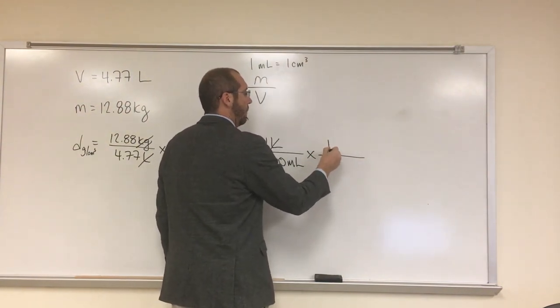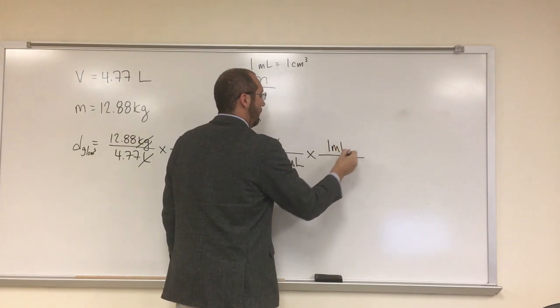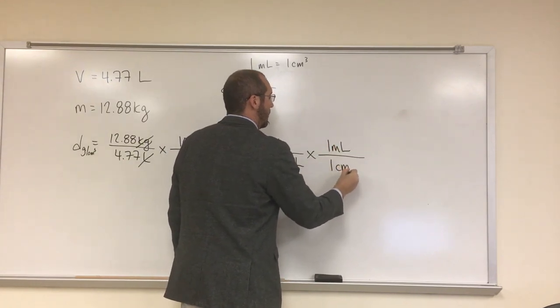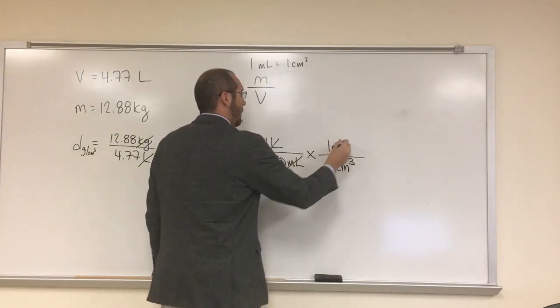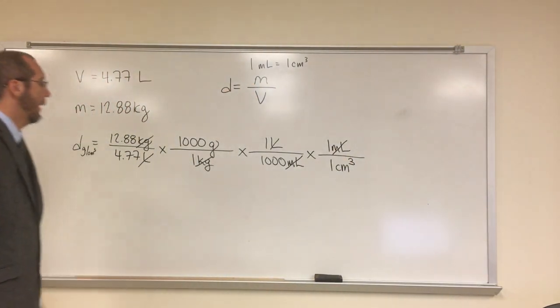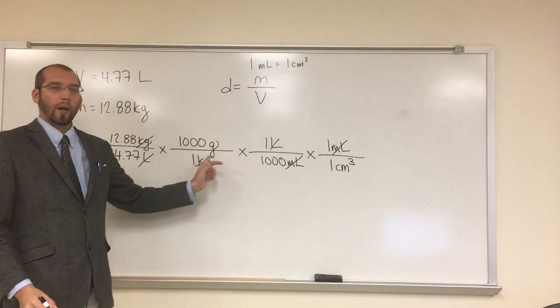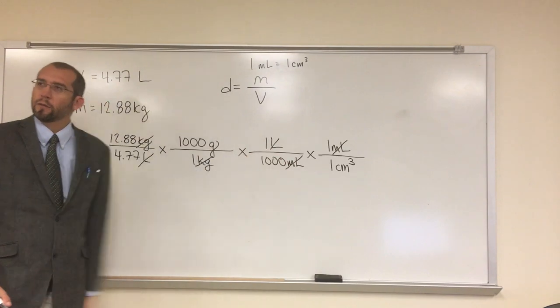We're going to put what on top? One milliliter. Very good. And one cubic centimeter on the bottom. Cancel and cancel. And notice our units now are in grams per cubic centimeter. Is everybody okay?